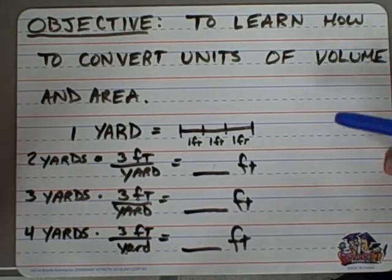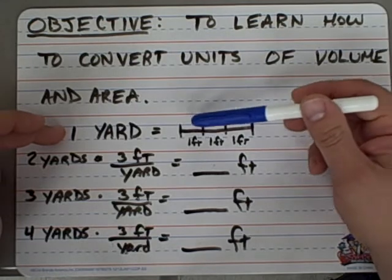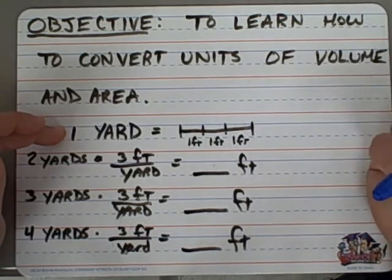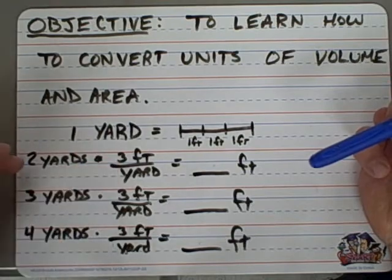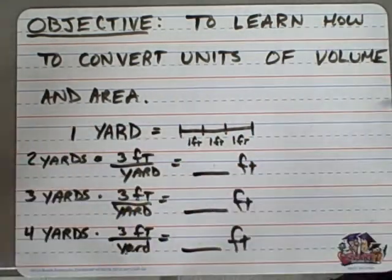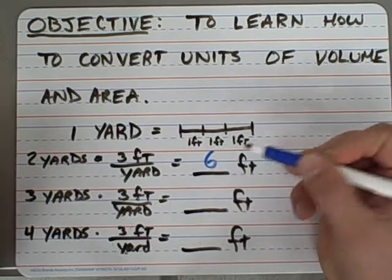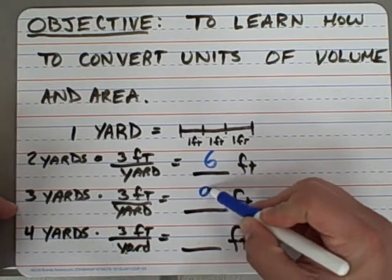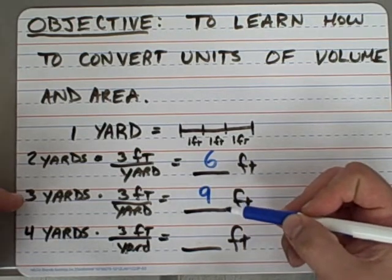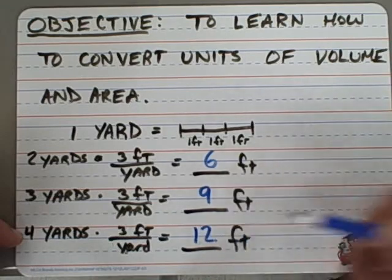Now, let's start off by looking at 1 yard. When you're converting 1 yard, 1 yard is equal to 3 feet. So if you wanted to know how many feet there were in 2 yards, you would do 2 times 3 and you would get 6 feet. 3 times 3 will give you 9 feet within 3 yards. 4 yards would have 4 times 3, which would be 12 feet.